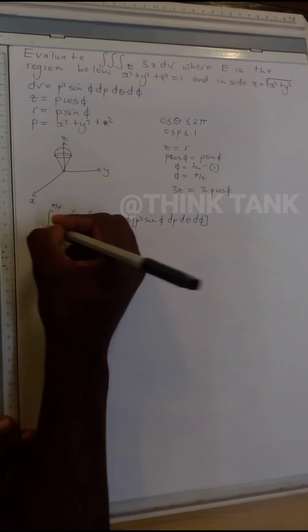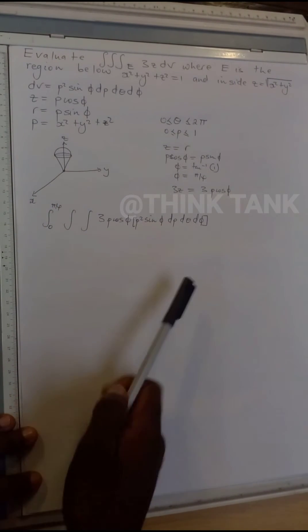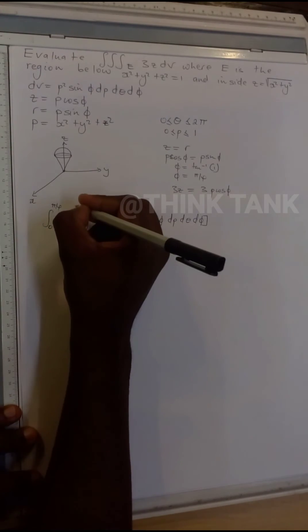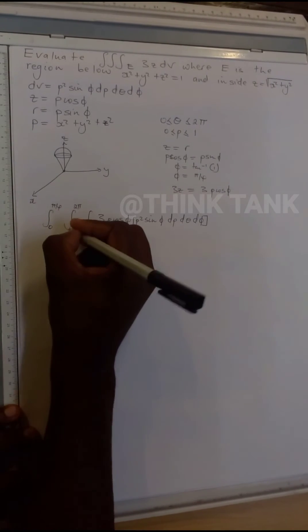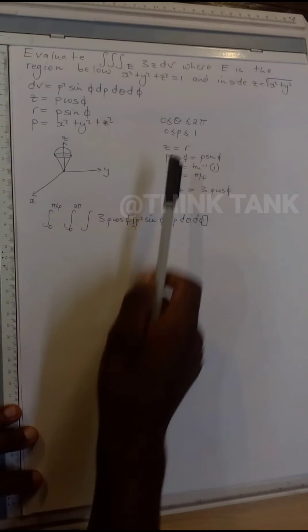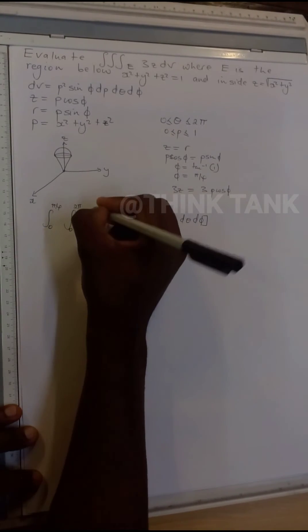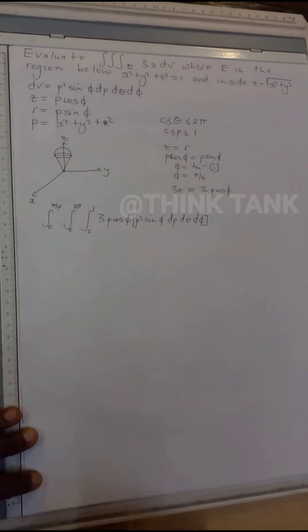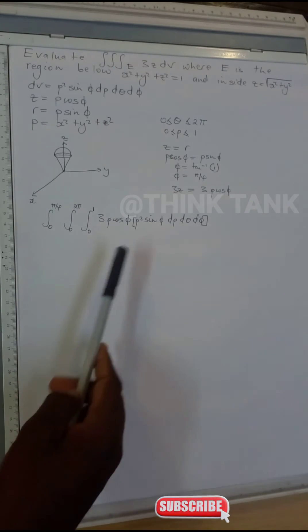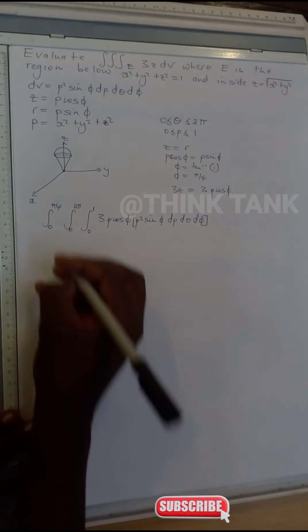φ is the outer integral, ranging from 0 to π/4. θ ranges from 0 to 2π. ρ goes from 0 to 1. So I have to first integrate with respect to ρ.